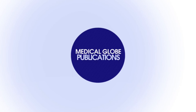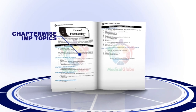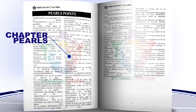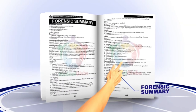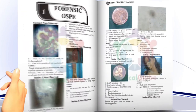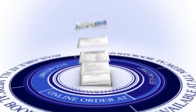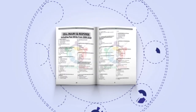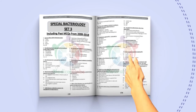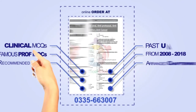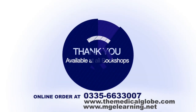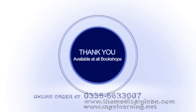Medical Globe brings you the solution to your problems during professional exams. We are introducing MBBS Cracks - this book contains chapter-wise important topics, solved past university questions, chapter polls to help you ace MCQ exams. Forensic summaries and important pictures from Big Robins and OSPI in high resolution are added to help you ace OSPI exams. MCQs from UHS and several other universities are included. Order online at 03356633007.